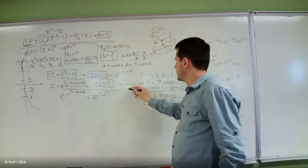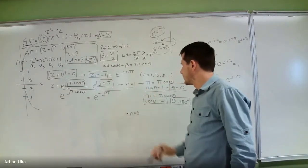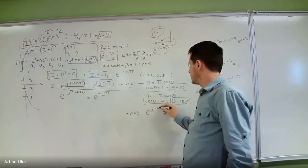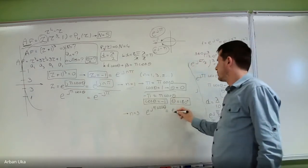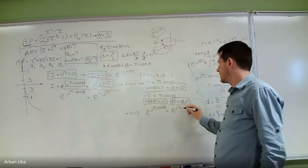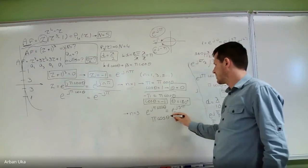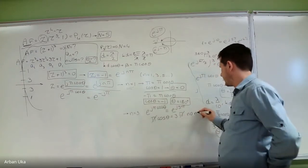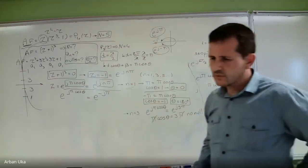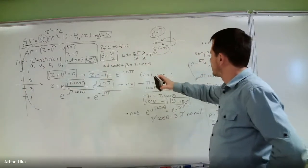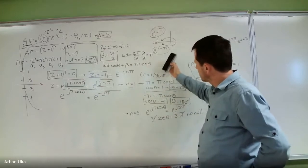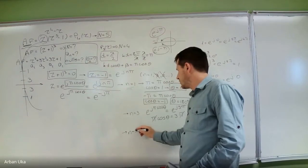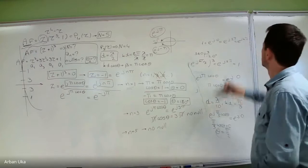Do we have any other null? Let's check — this was for m = 1. Let's try for m = 3. If m = 3, we observe e^(j·π·cosθ) = e^(j·3π), so π·cosθ = 3π. It looks like we have no null there, since cosθ would need to be 3, which is out of range. So there is no need to search any further. Similarly, for m = 5, we can directly say there is no null.